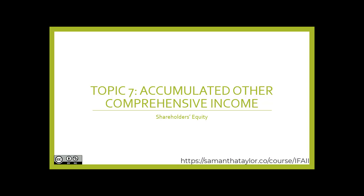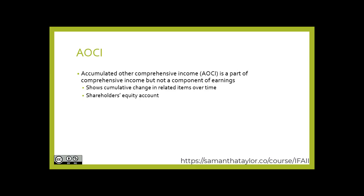Topic 7: Accumulated Other Comprehensive Income, otherwise known as AOCI. AOCI is a part of comprehensive income, but is not a component of earnings. This shows the cumulative change in related items over time, including realized and unrealized gains and losses, and this is a part of the shareholder's equity account. Think of AOCI as items that bypass the income statement, but yet still reflect the relative growth or losses accumulated within a company.